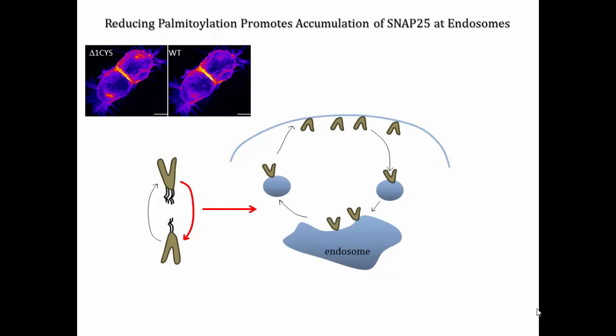Decreasing the number of palmitoylation sites leads to an accumulation of SNAP25 on endosomes, as shown in the top left figure of this slide. This change in SNAP25 distribution is predicted to lead to a decreased capacity for exocytosis, but an increased capacity for endosomal fusion.